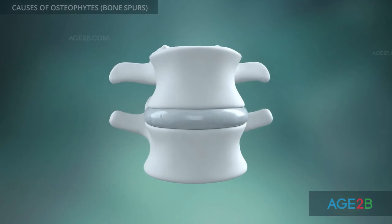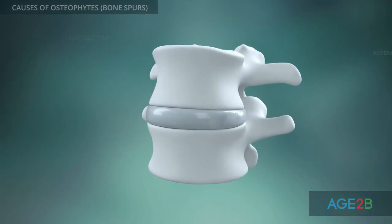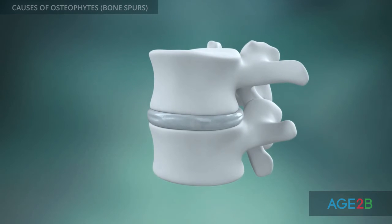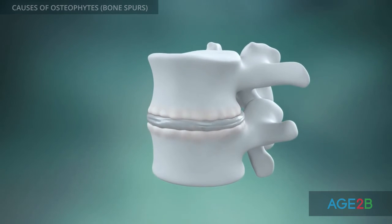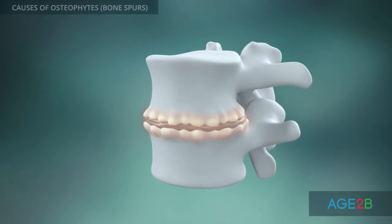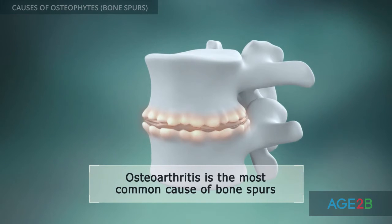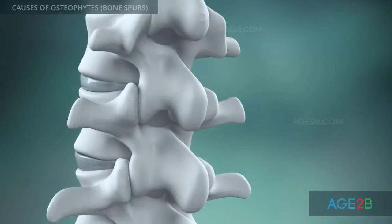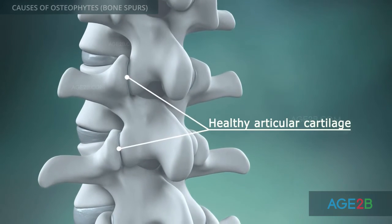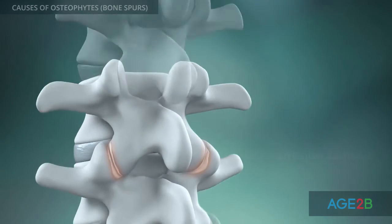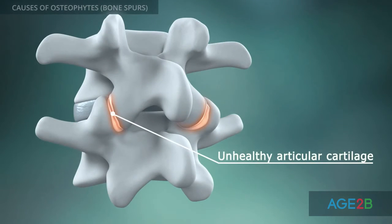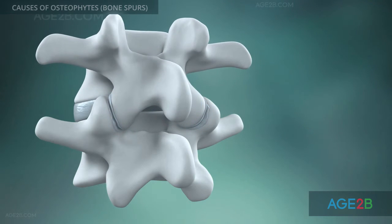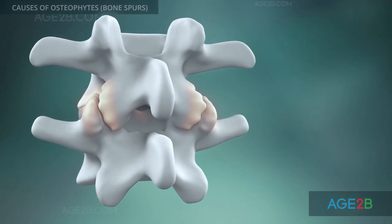Bone spurs most often form due to osteoarthritis. Damaged discs or joints lead to excessive movement in the spinal joints. In order to compensate for this extra movement, the body forms osteophytes on the surfaces of the joints and along the edges of the vertebrae.